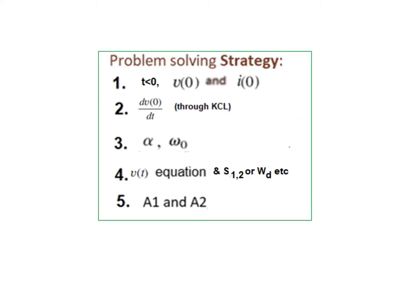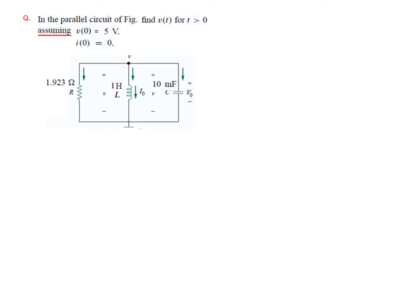The problem-solving strategy follows five steps, which we have discussed earlier. Now let's solve a question — the values and initial conditions are given, and we need to find the equation for V(t).